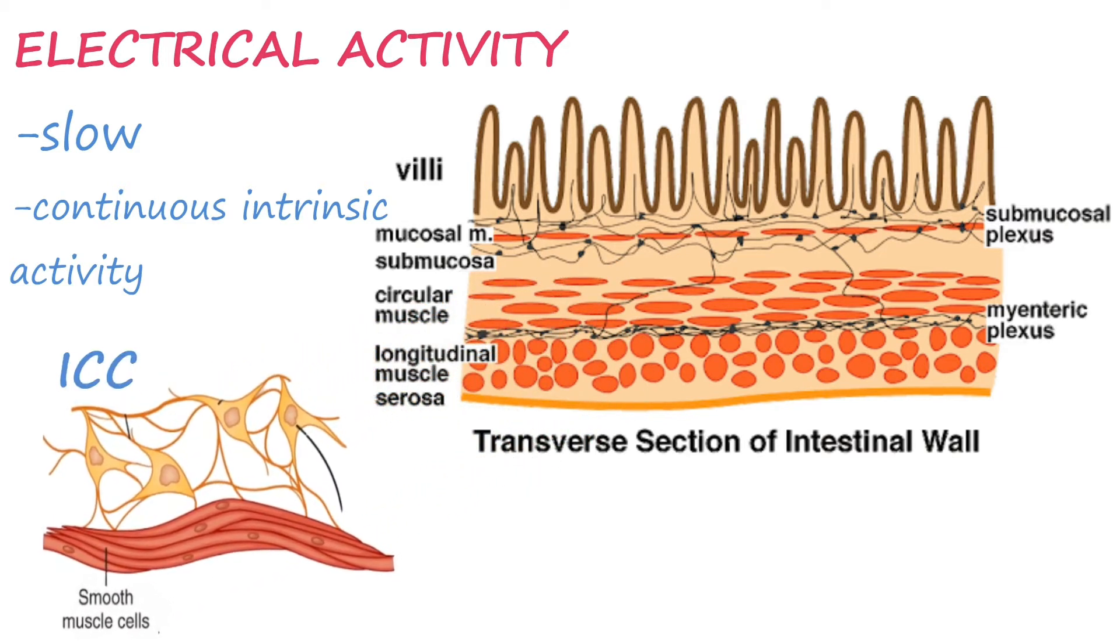They are the electrical pacemaker cells of our gastrointestinal system, like the SA node in the heart. Now let's dive into the action potential generated in the smooth muscle for its contraction.